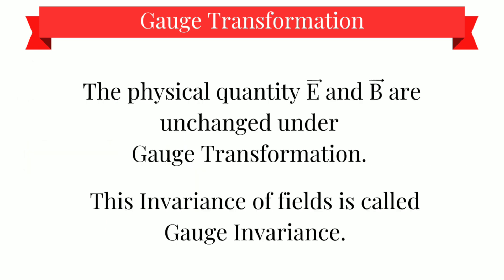So, finally, we can conclude this in one line is, the physical quantities E and B are unchanged under gauge transformation. And this invariance of fields is called gauge invariance.